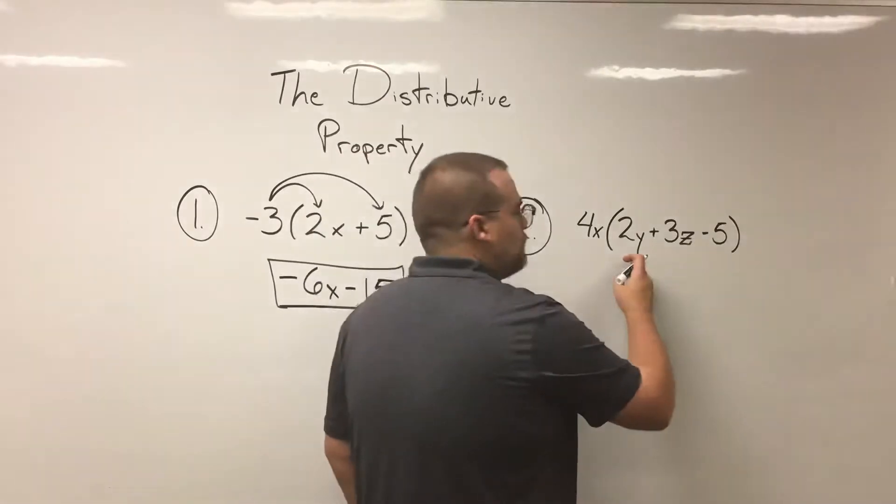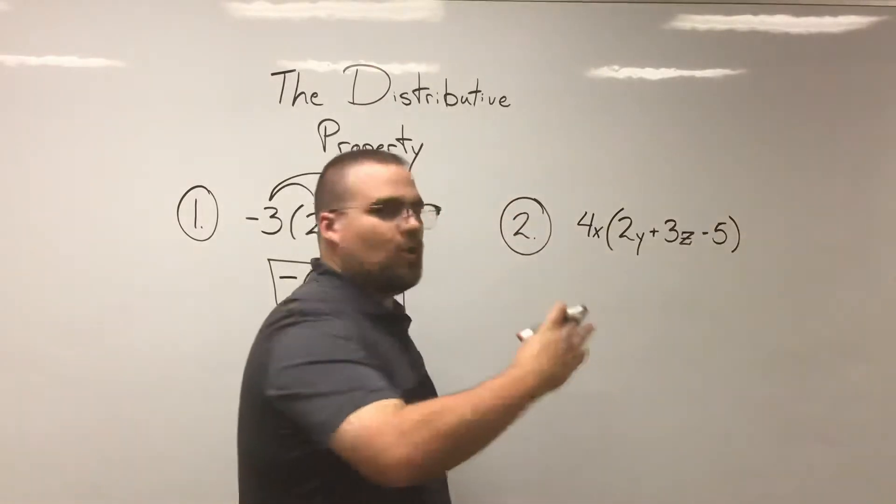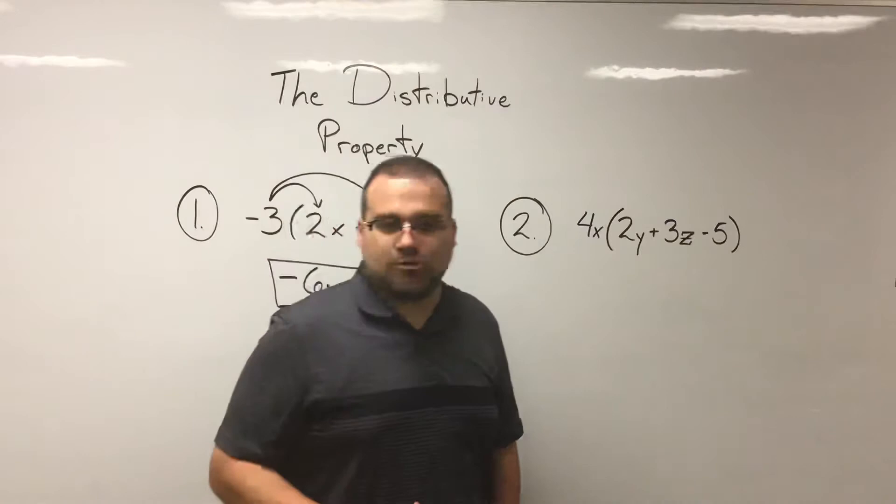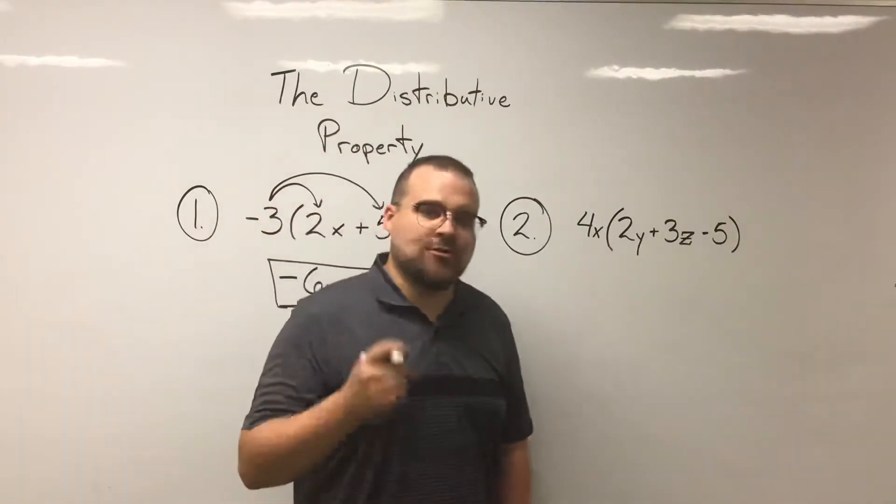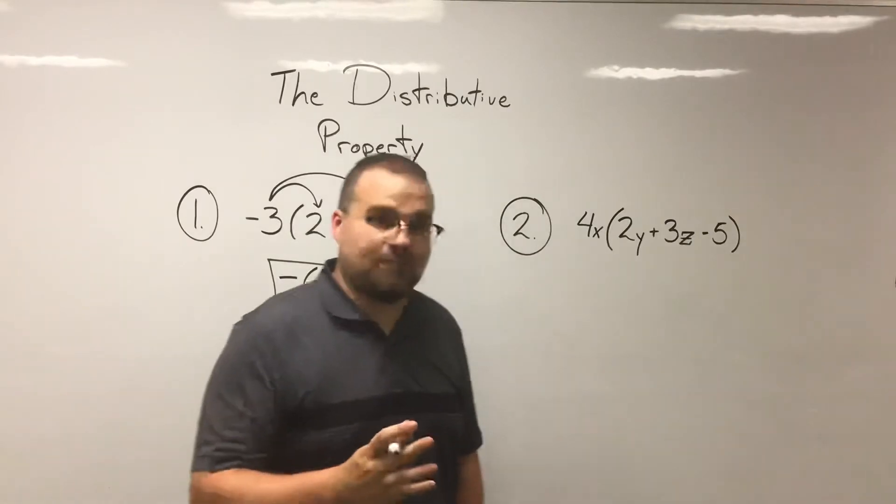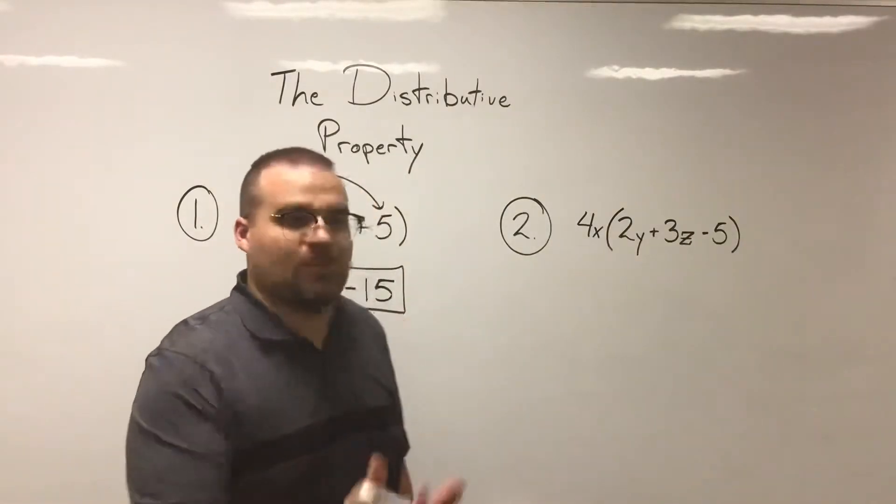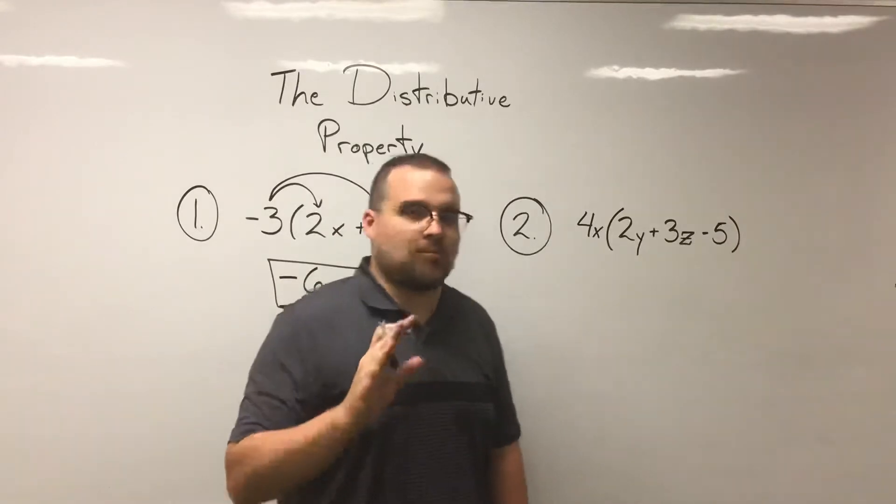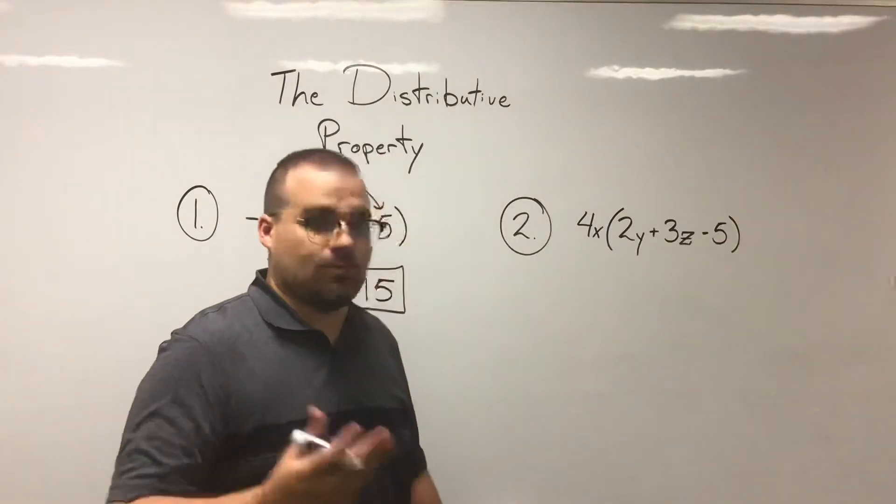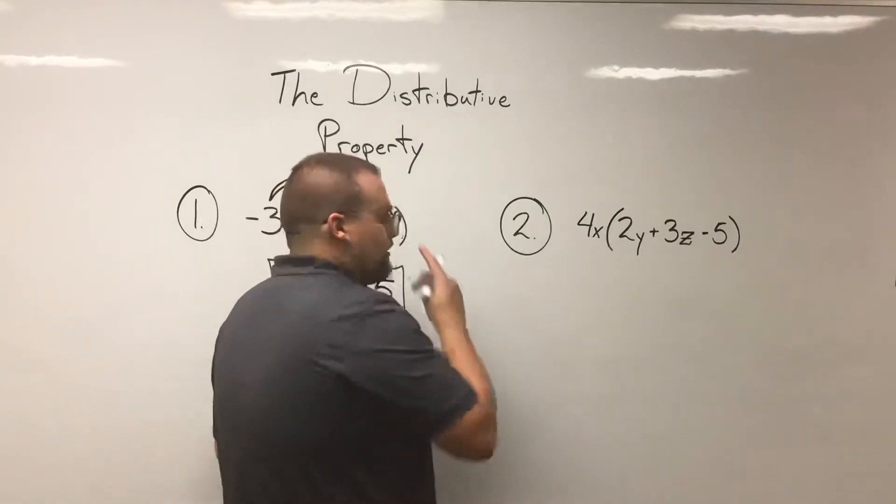The fact of the matter is, whether there are two numbers, three numbers, or 50 numbers inside those parentheses, the number on the outside will distribute to every single one of them. Every time. We don't just skip the third or skip whatever one. Every single number will be and must be distributed to.